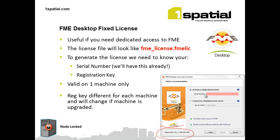FME Desktop's fixed license is a very useful license model if an individual needs dedicated access to FME. The license file will be provided to you — it'll be called something like something.FMELIC. That file extension tells you it's a fixed license. To generate that license, we need your registration key, so the first thing to do is install FME Desktop and fire up the license wizard. In the bottom left-hand corner, you'll see the registration key, which is specific and only valid to your machine. If anything happens to your machine — new RAM or a new hard drive — that number will likely change, and we're happy to reissue your license or move it to another machine.